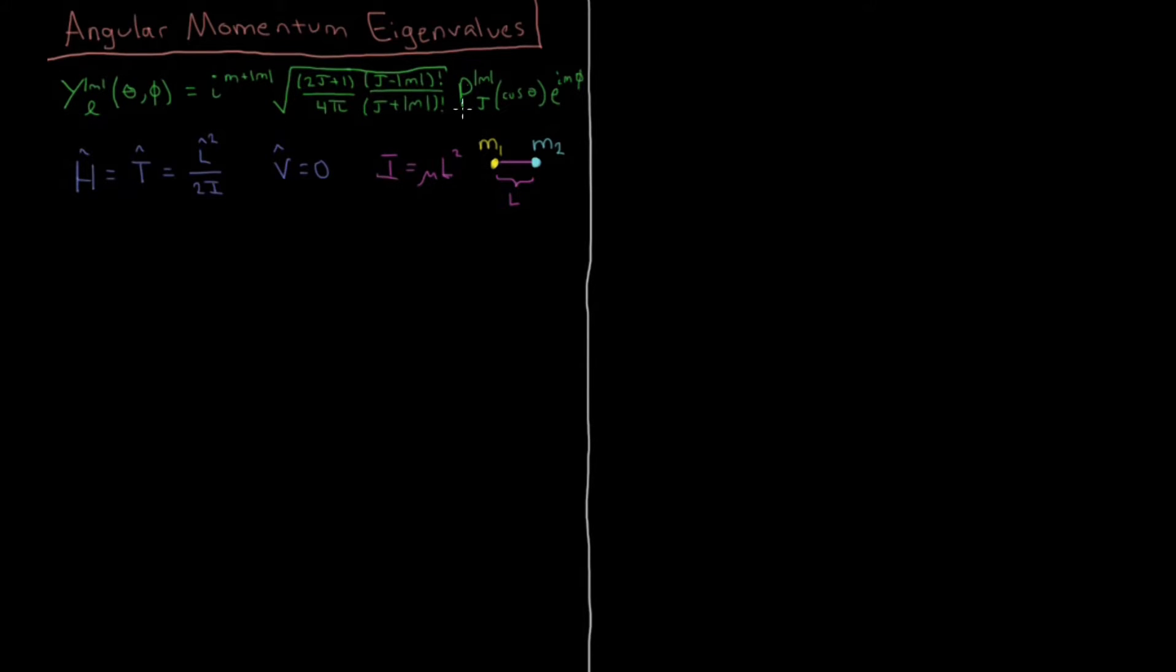and cosine theta is the variable which we put in there for x or whatever variable you see when you look it up in a table. The variable of the polynomial is cosine theta, and then that times a complex exponential, the oscillatory function, e to the i m phi.